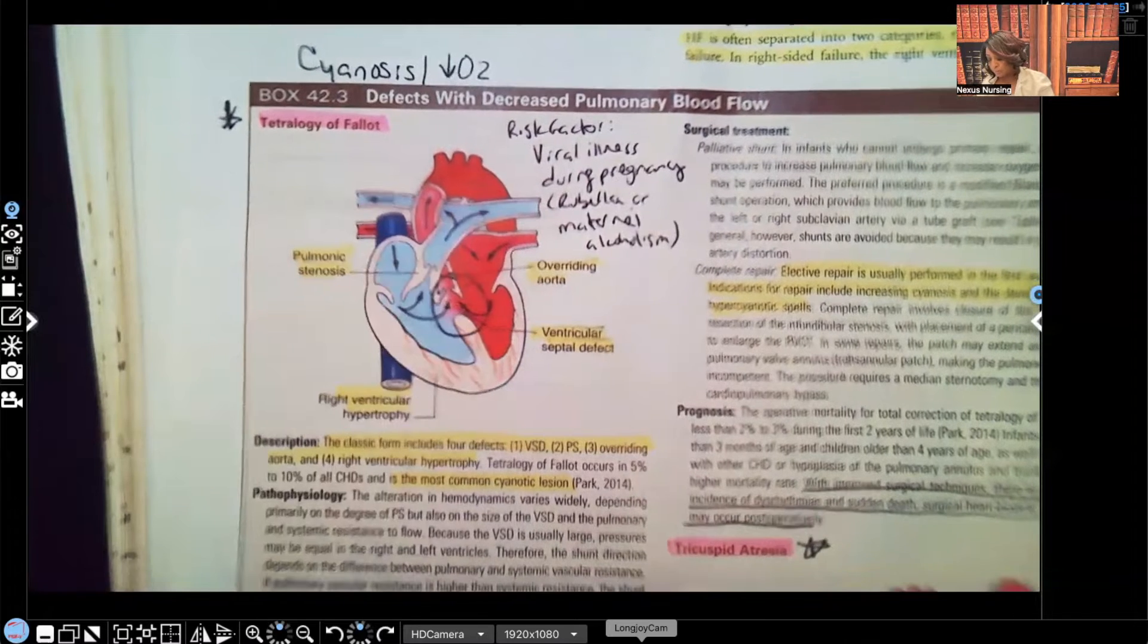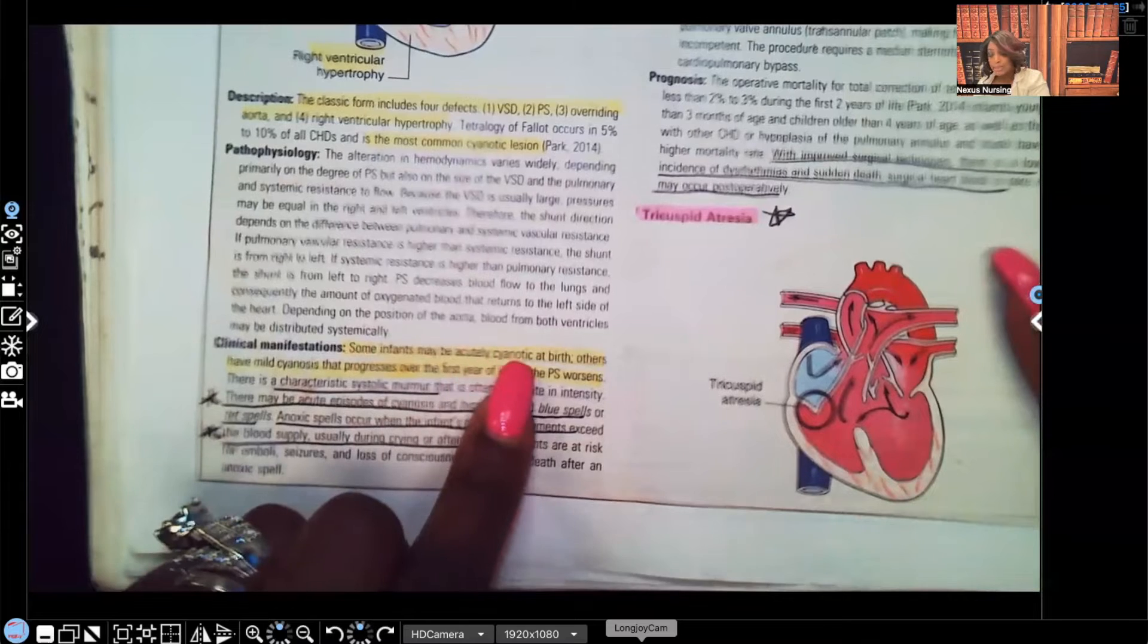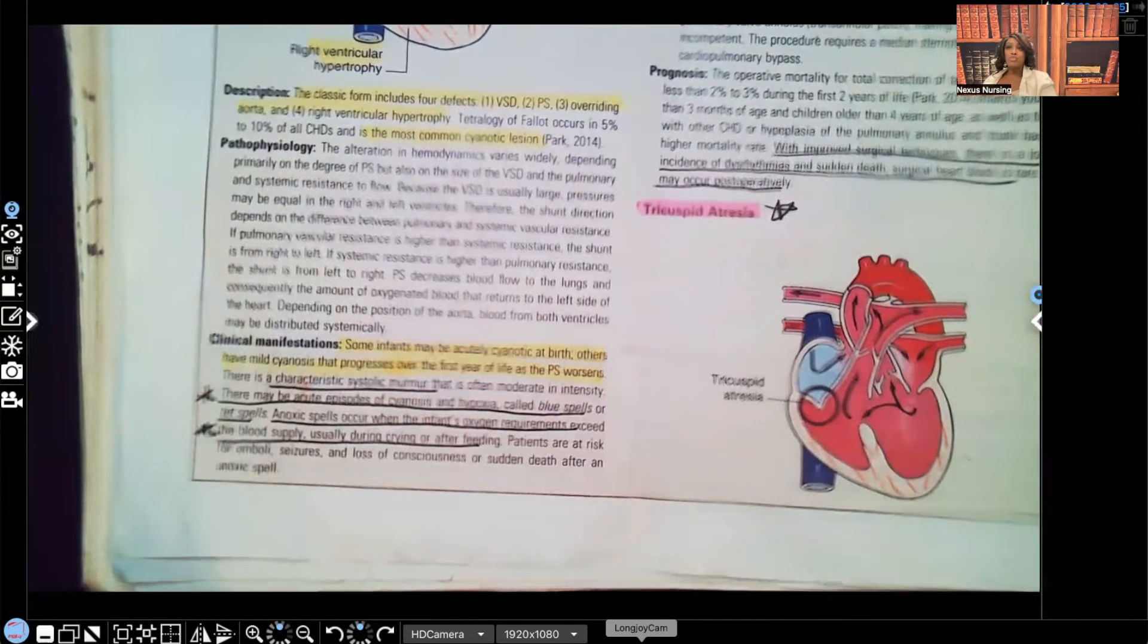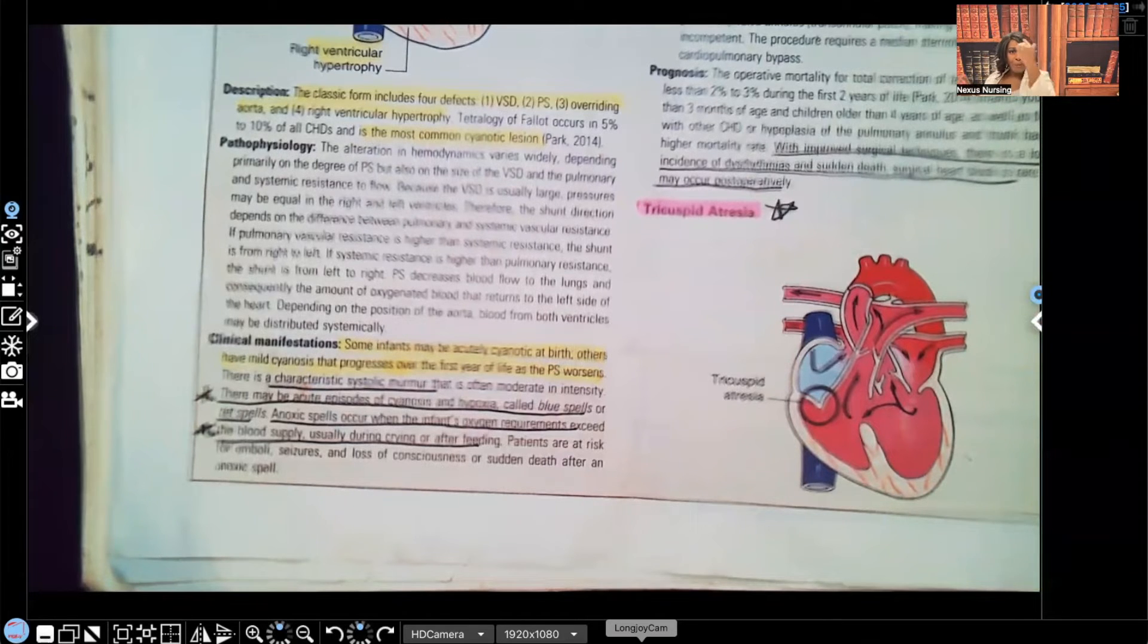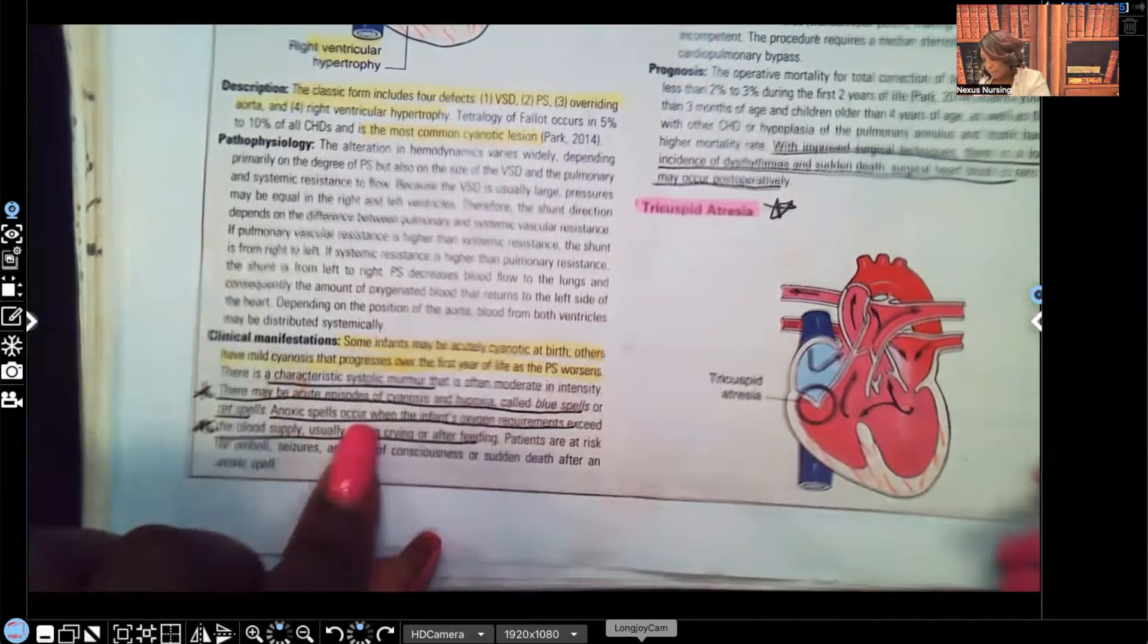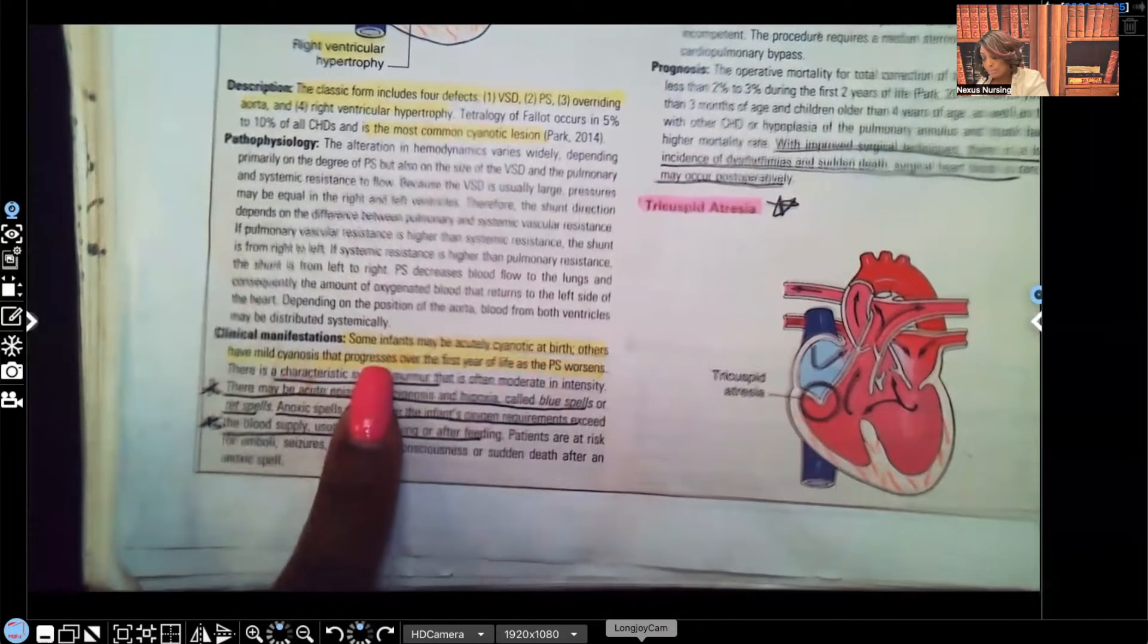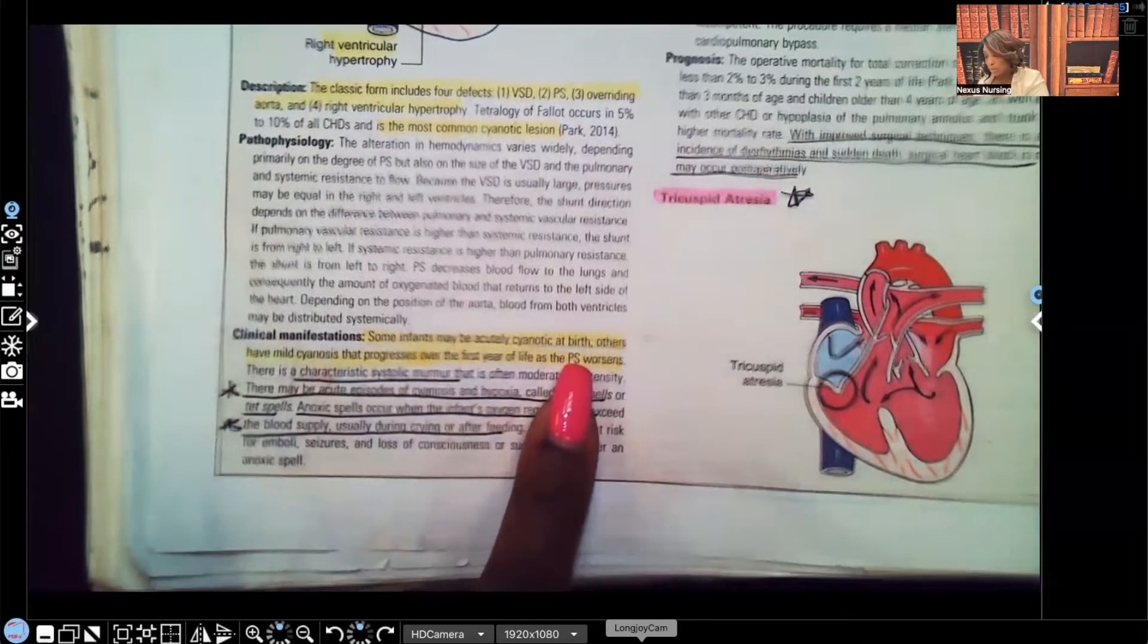Clinical manifestations: Some infants may be acutely cyanotic at birth. At birth it is normal for us to see the extremities, the fingertips or the toes, to be a low bluish color. But central cyanosis, absolutely not. That is not normal. But in this patient, we may see that some infants may be acutely cyanotic at birth. Others have mild cyanosis that progresses over the first year of life as the PS worsens.